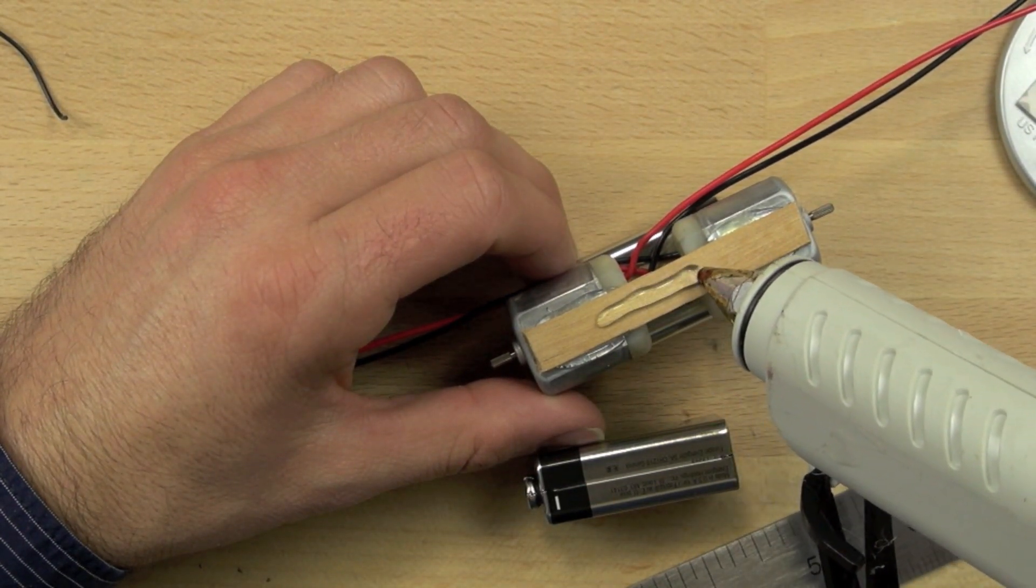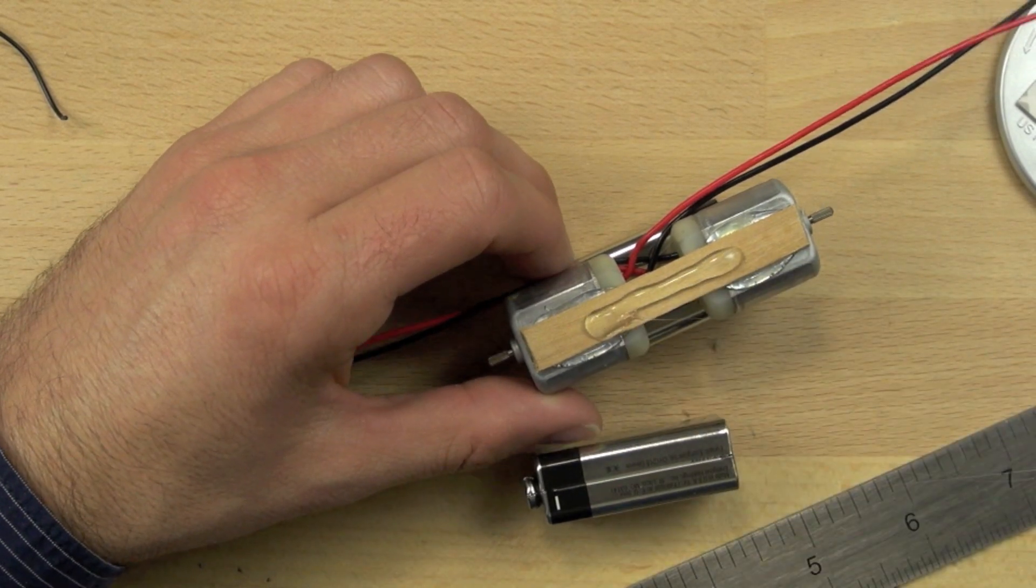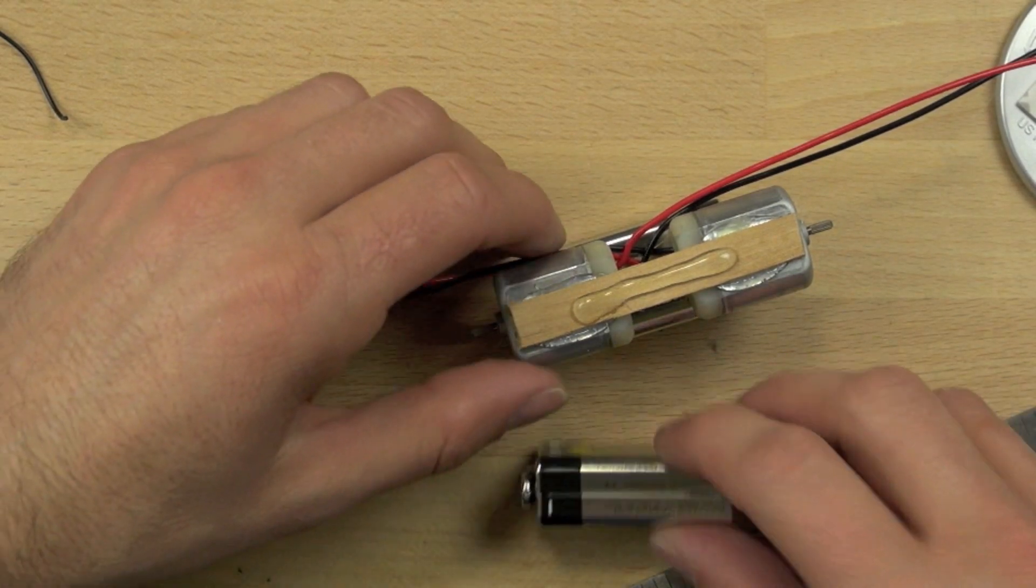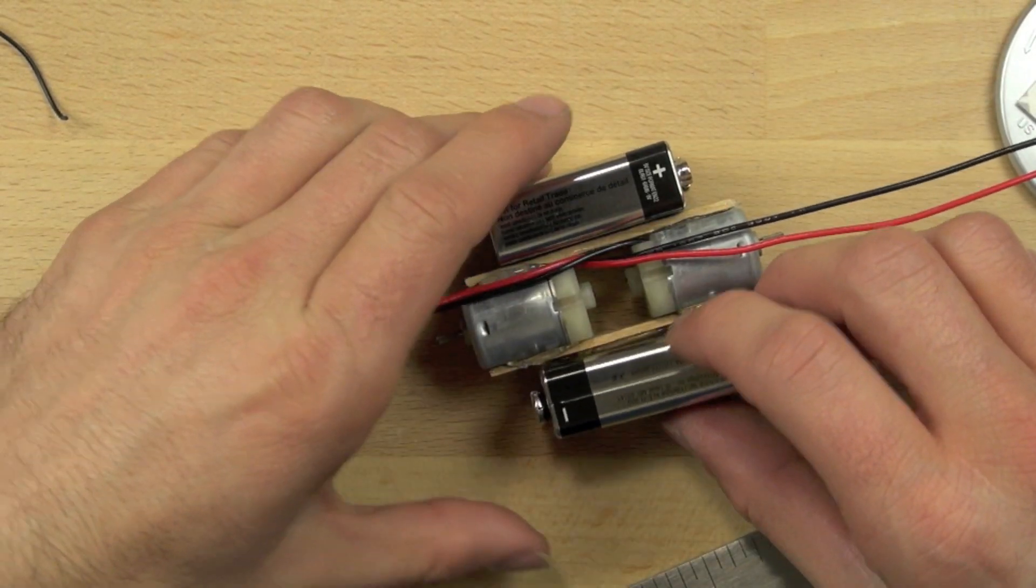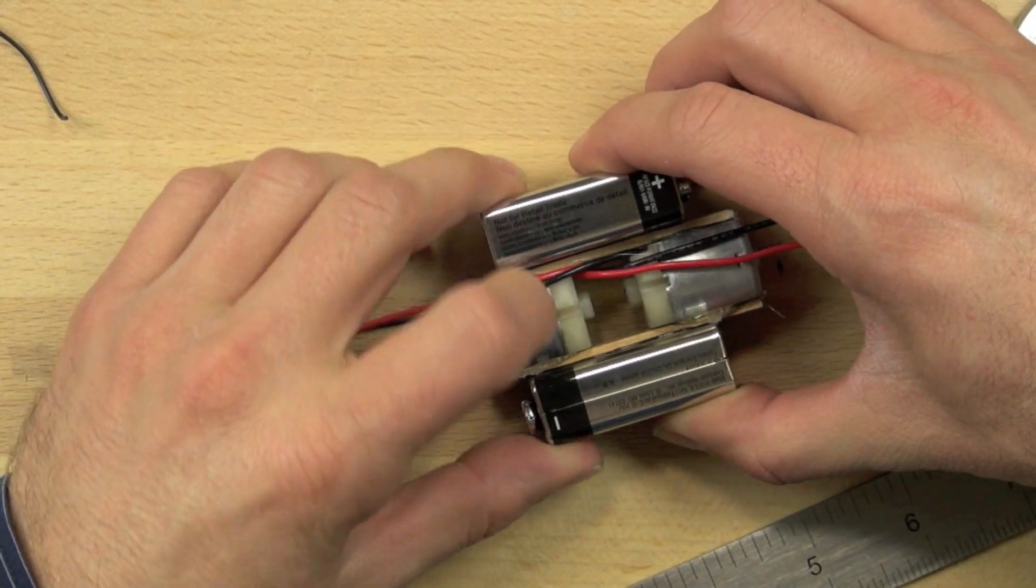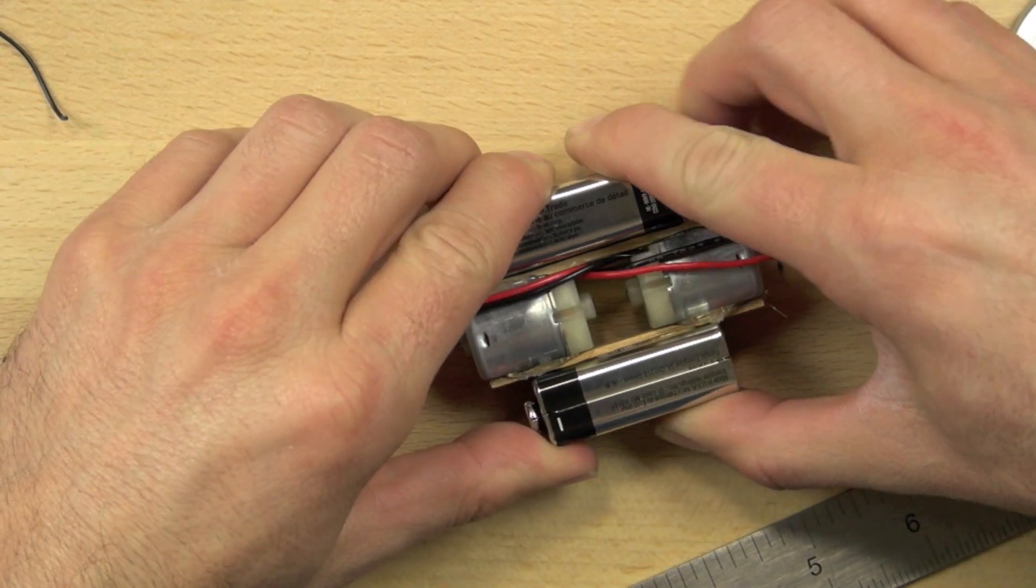We'll put about an inch and a half bead of hot glue and we want that right in the center of our popsicle stick. Then again, we're going to try and make sure that that battery is lined up right in the center of our motors directly across from the other battery. We'll squeeze it together, squeeze everything together and make sure everything is pushed down.